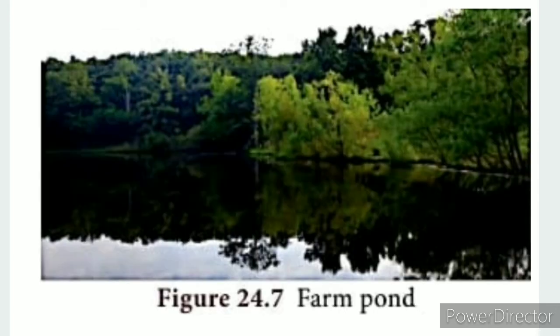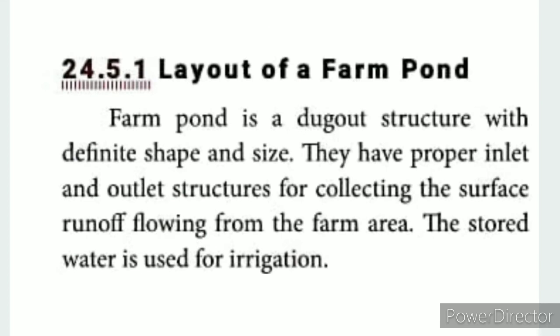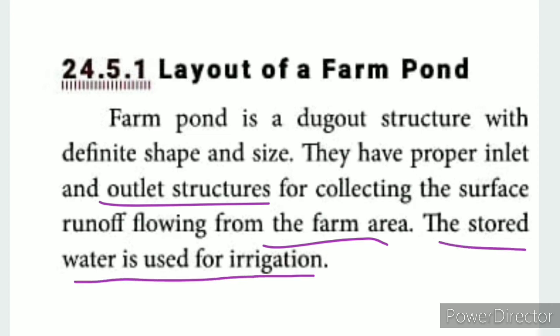A farm pond is a dug-out structure with a definite shape and size. Farm ponds have proper inlet and outlet structures for collecting surface water flowing from the farm area. The stored water is then used for irrigation.